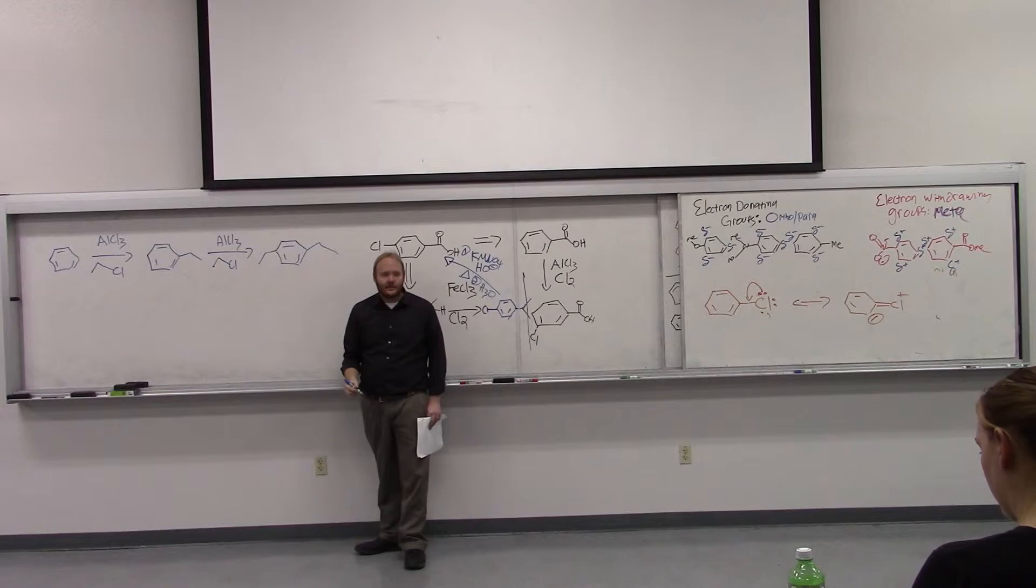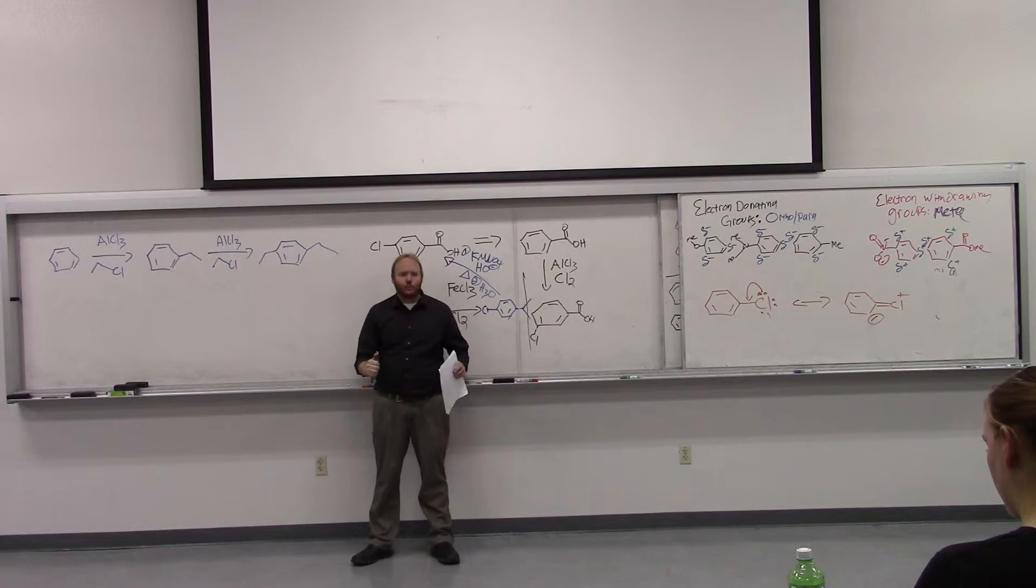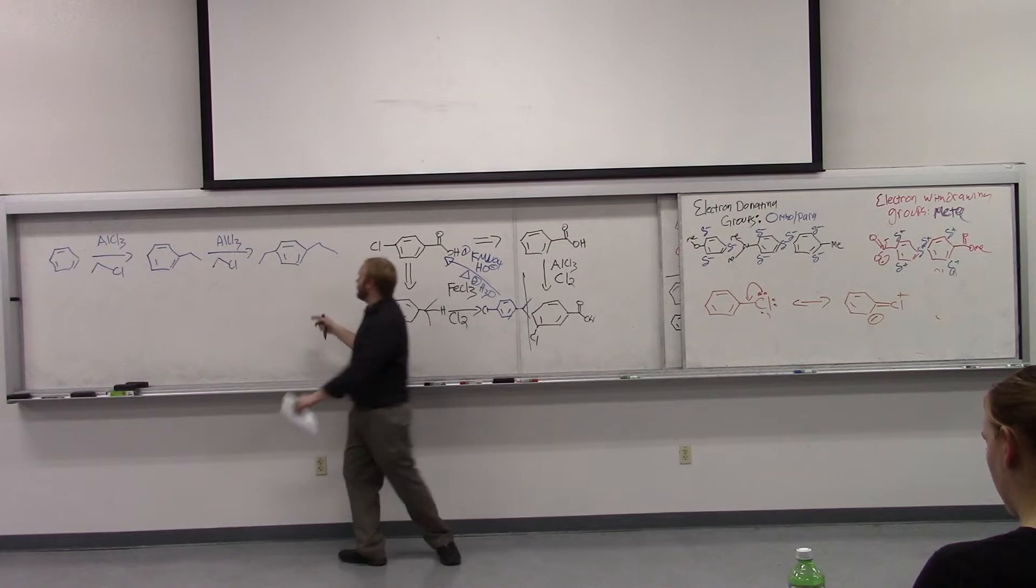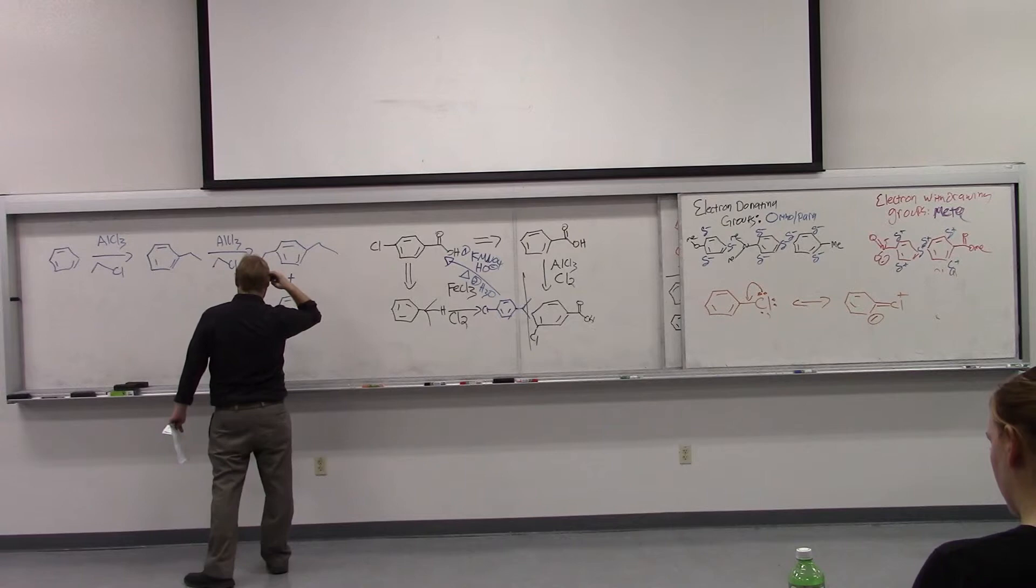That will give us a dialkylated product. And of course, we just don't get one dialkylated, we get two, right? Because we get both ortho- and para-dialkylated. So we'll get a mixture of this plus the para plus the ortho.